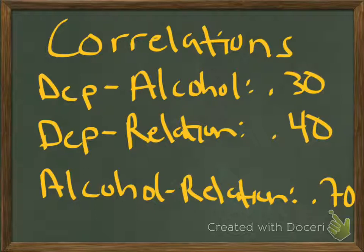To find out how much variation is explained, we look at how strongly the variables are related — we look at correlations. The correlation between depression and alcohol is 0.30. The correlation between depression and relationship woes — the higher somebody scores on relationship problems, the more depressed they are — is 0.40. What makes multiple regression different from just looking at bivariate correlations is that we look at the relationship between an independent variable and the dependent variable when you control for the other independent variables.